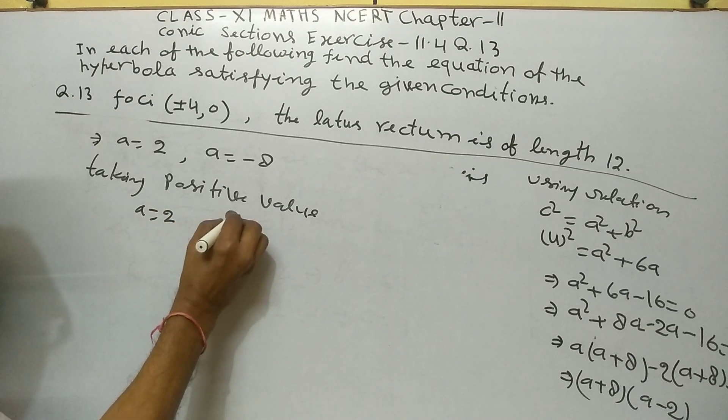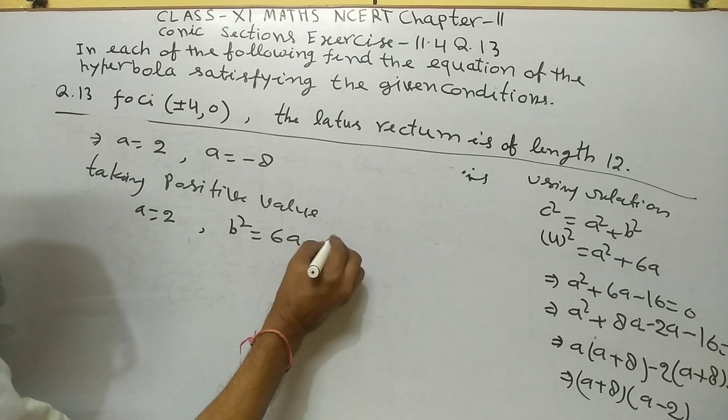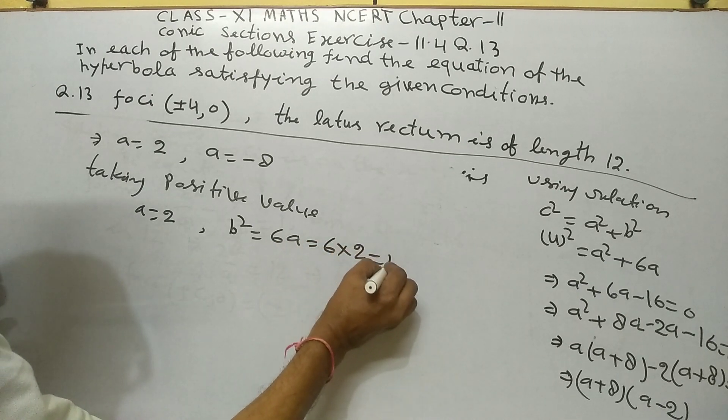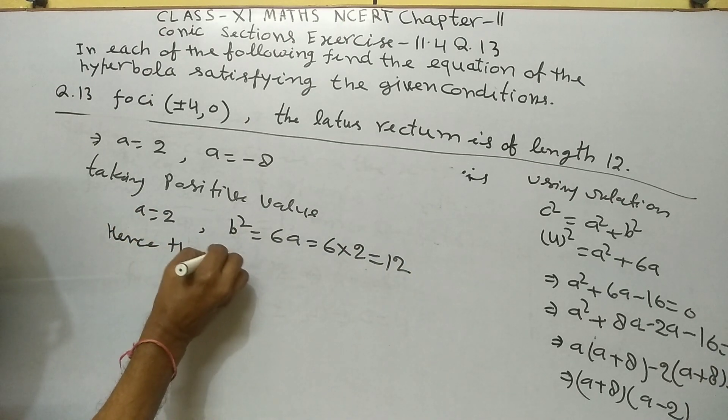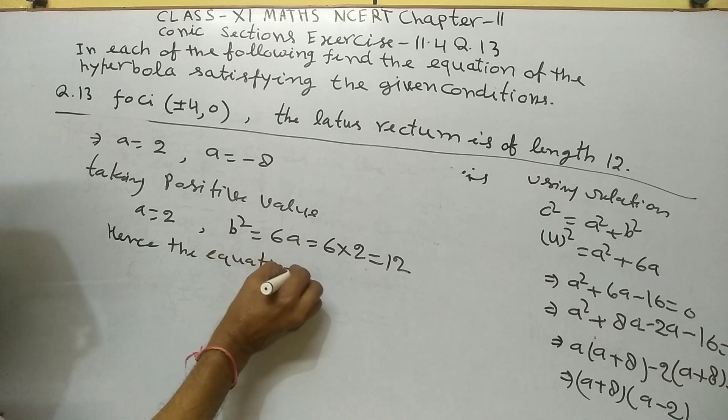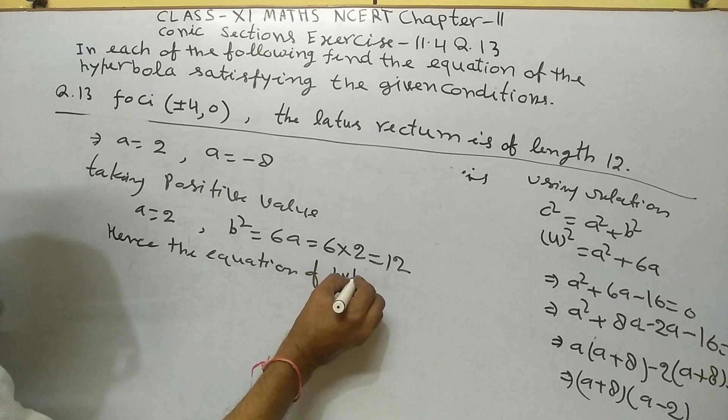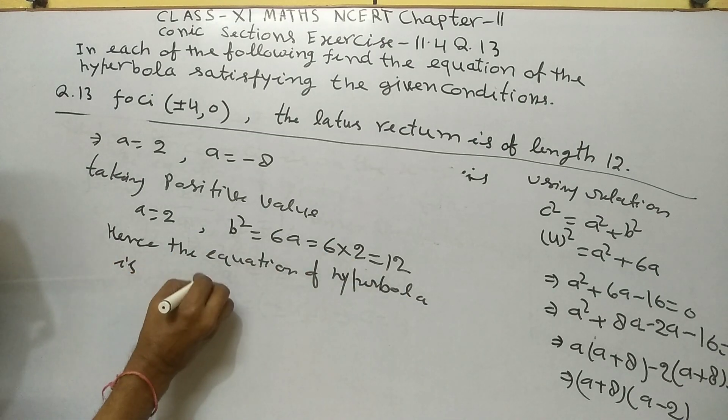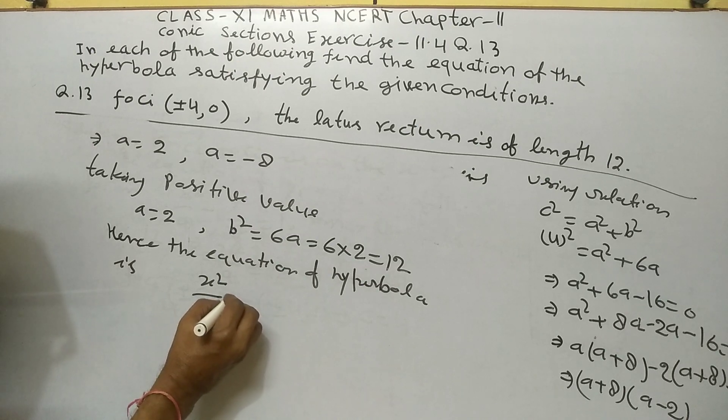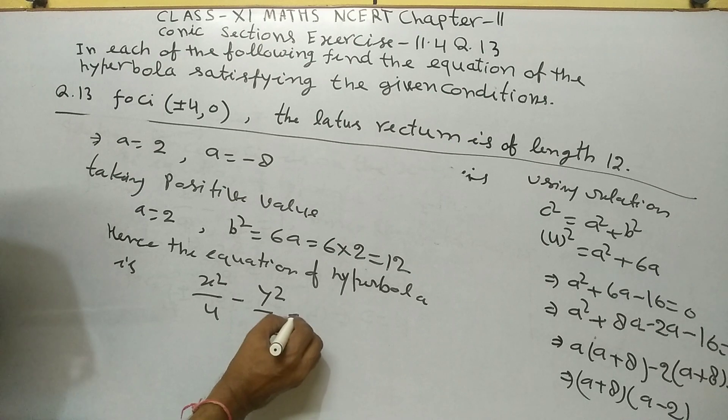So b² = 6a = 6(2) = 12. Hence the equation of hyperbola is x²/4 - y²/12 = 1.